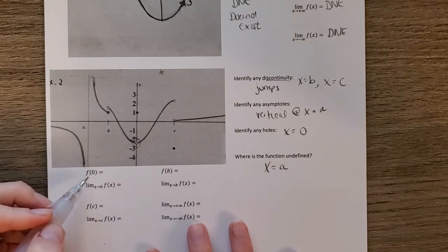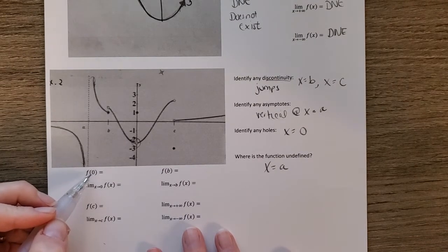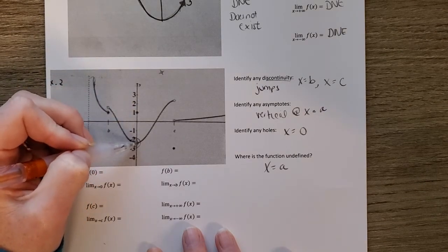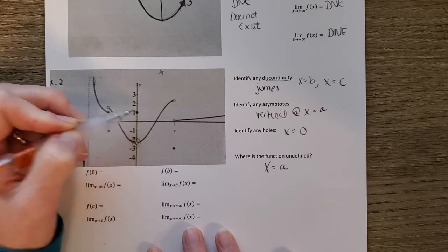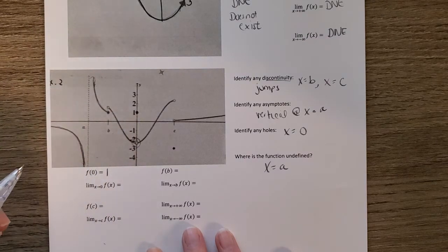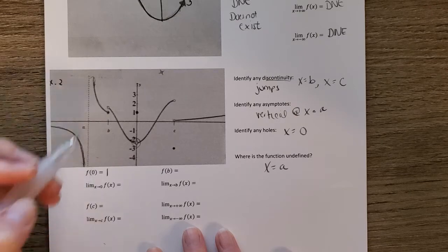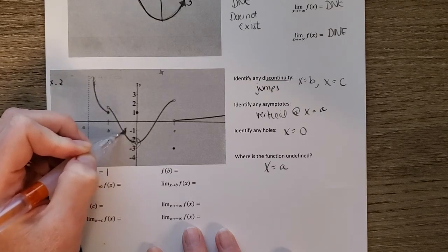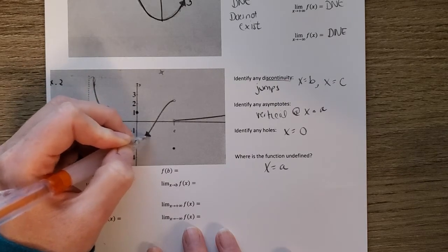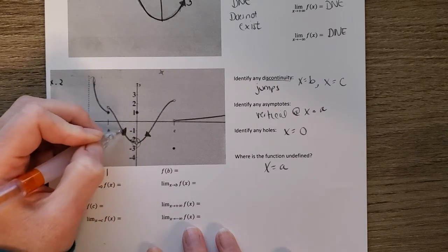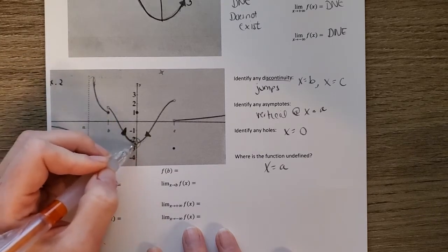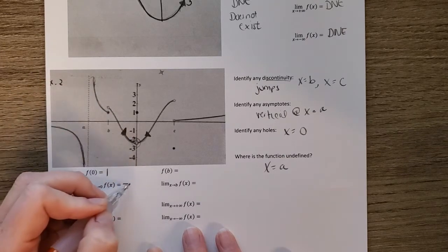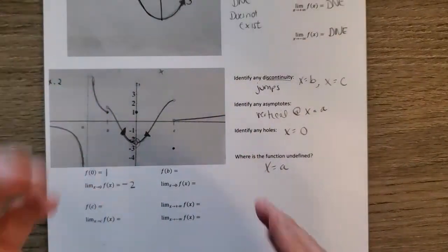Now, f of zero means the value of the function when x equals zero. Going to x equals zero, there's a hole, but the solid point above it gives the value — f of zero equals 1. For the limit as x approaches zero, we approach from both directions. Coming from the left and right, the graph approaches approximately negative two.